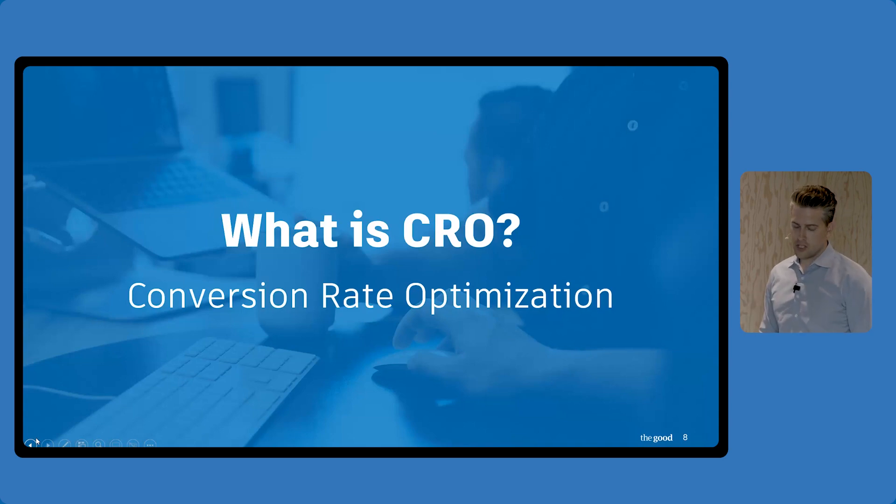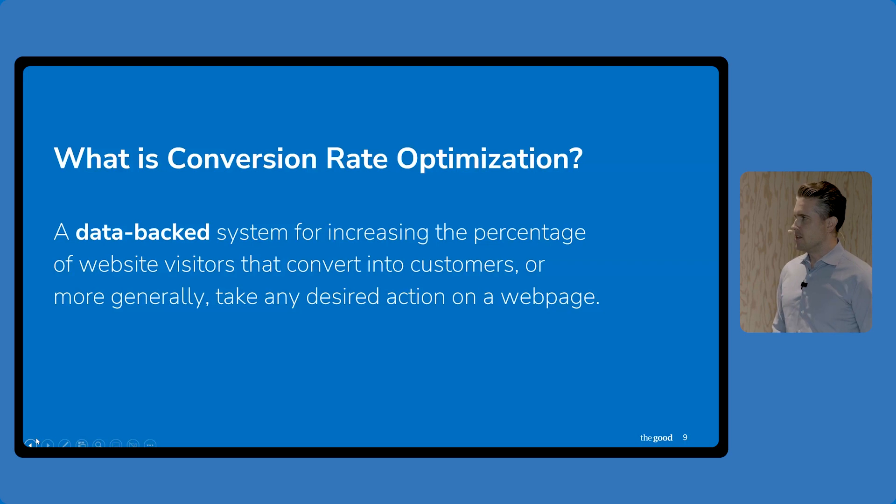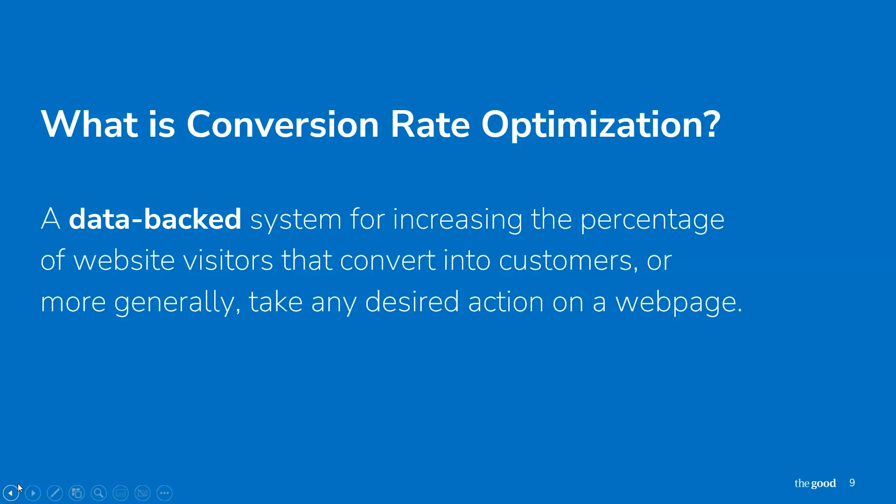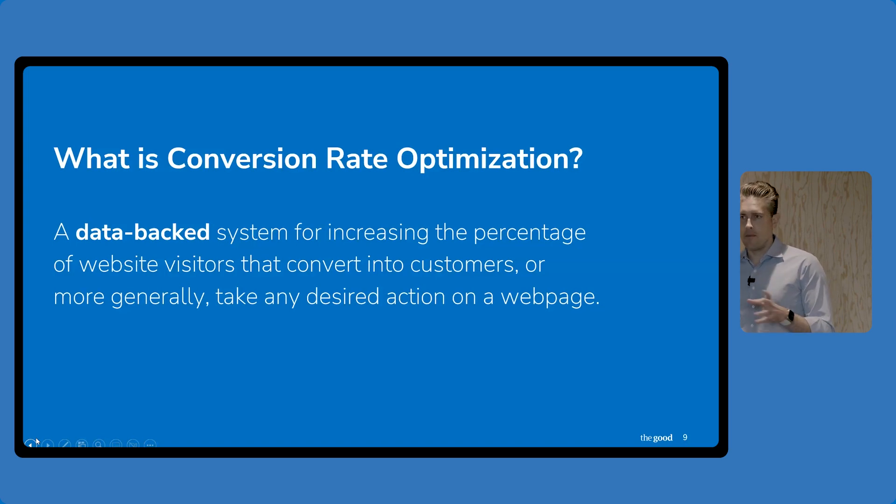First thing I want to cover is what is conversion optimization? This gets muddled quite a bit. As I mentioned, you can find best practices, but when done right, you can really see some massive gains out of this. It's one of the most effective tools in a marketer's toolbox. I want to talk about what true conversion rate optimization is - a data-backed system for increasing the percentage of website visitors that convert. The first thing I want to focus on is data-backed.